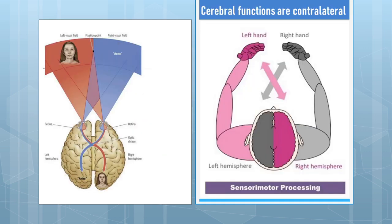When we speak about lateralization, you also have to understand that cerebral functions are contralateral. That is, the right hemisphere controls the left side of the body and the left hemisphere controls the right side of the body. This is because the two hemispheres receive contralateral input — that is, information from the opposite side of the body.